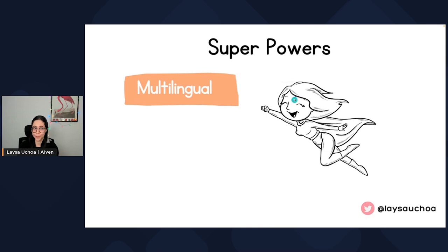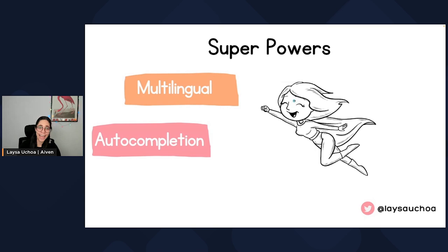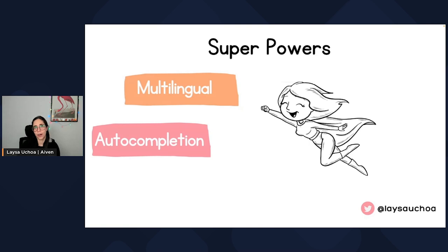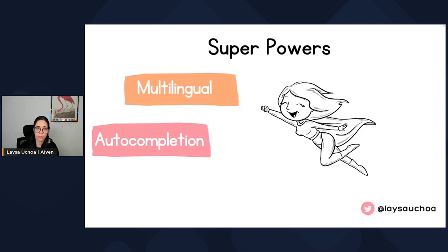So if OpenSearch would be a hero, it would speak many languages — it would be a polyglot. I also think if OpenSearch would be a hero, it would be able to read your mind. You've probably seen this in other search engines: when you are typing something, the search engine kind of guesses what you wanted to say based on relevant results or whatever data is in your database. So OpenSearch has autocomplete support, which means that if you type something, it will try to autocomplete for you. This is a very powerful tool.